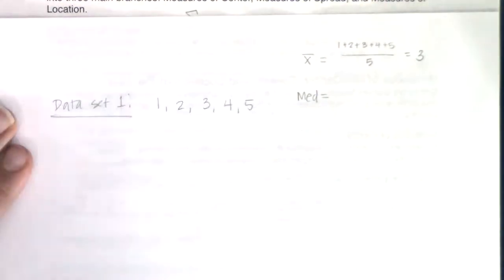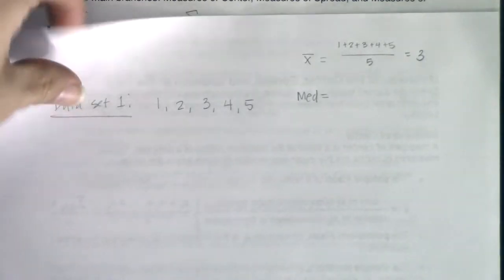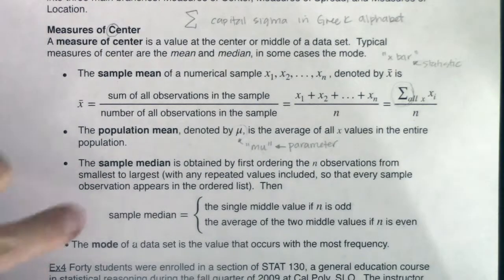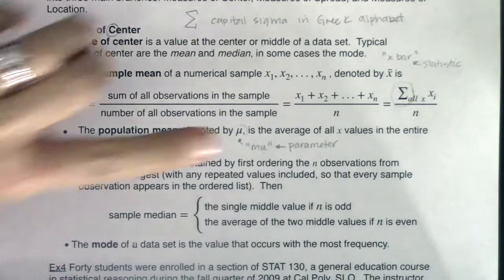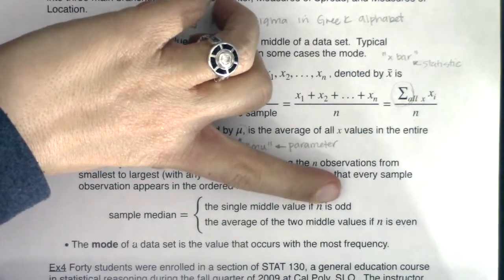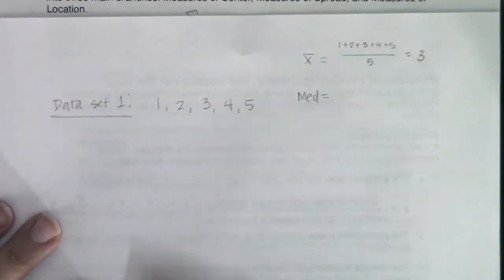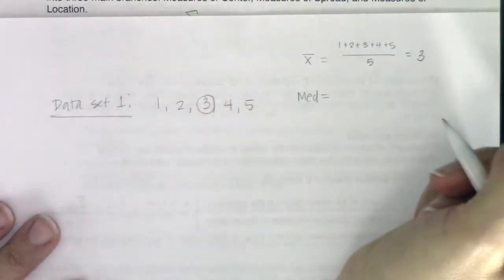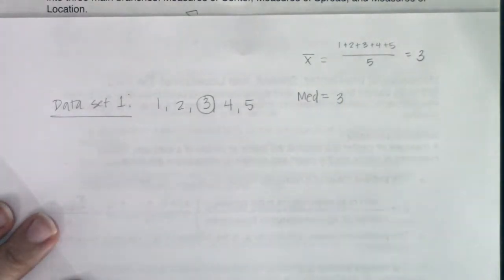For the median, I need to order my observations from smallest to largest — which was already done — and then I have an odd number of observations, five data points, so I'm going to have one single middle value. The number right in the middle is 3, so the median is also 3. And when the mean and median are the same, you actually get to say that the data is symmetric.